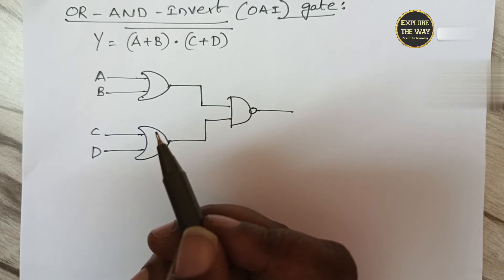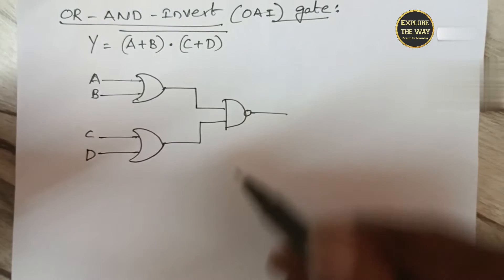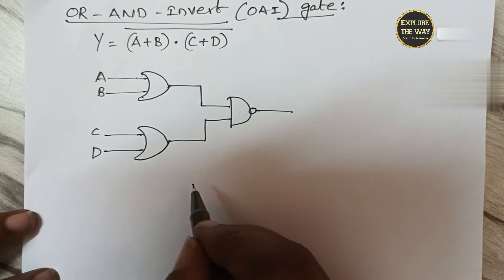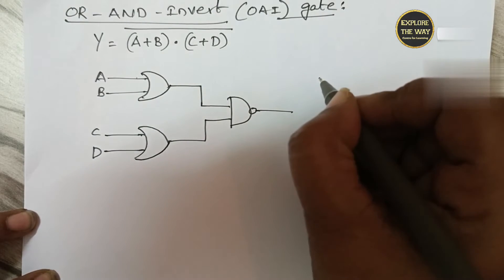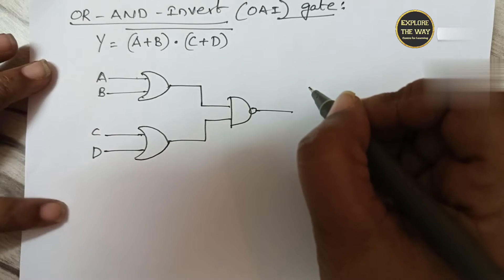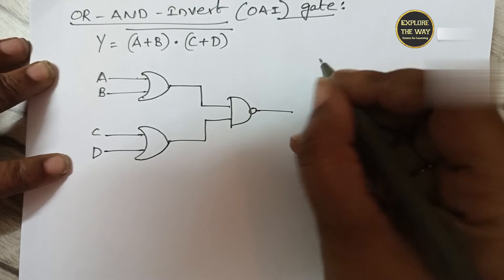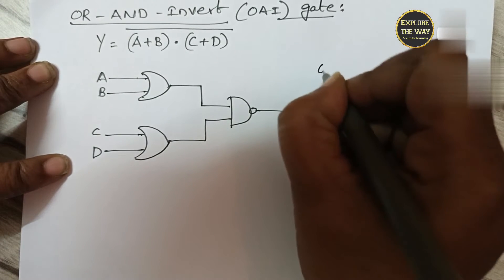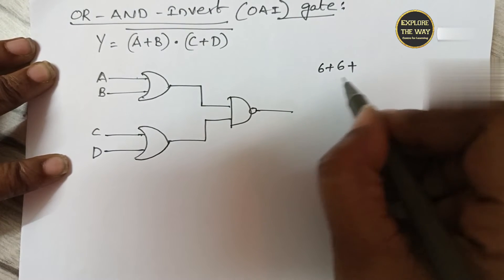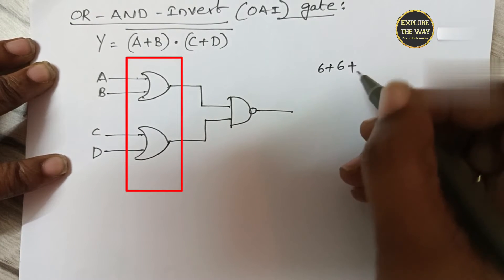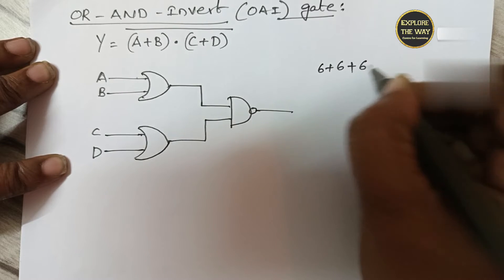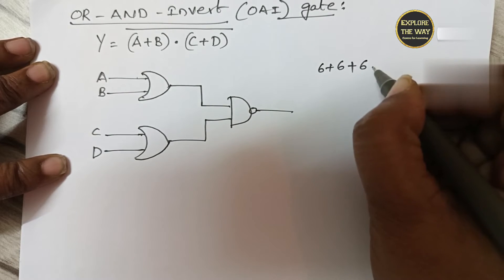This is the OAI gate. If this logic function is implemented by using basic gates, it requires 20 transistors. In the first level, OR gates are used — each OR gate requires 6 transistors. And in the second level, one AND gate is used — each AND gate requires 6 transistors.